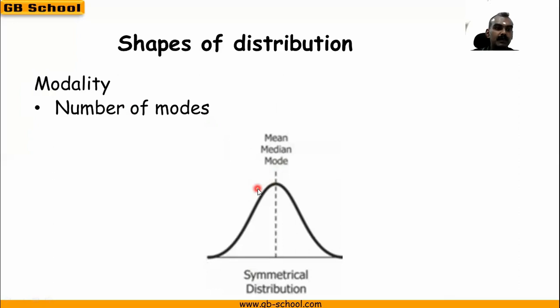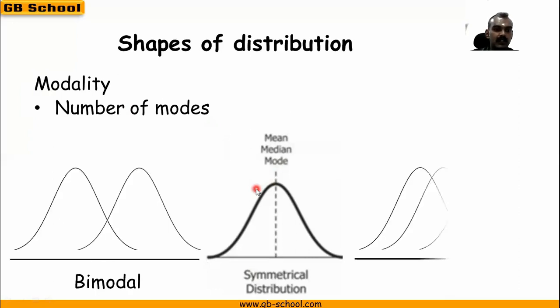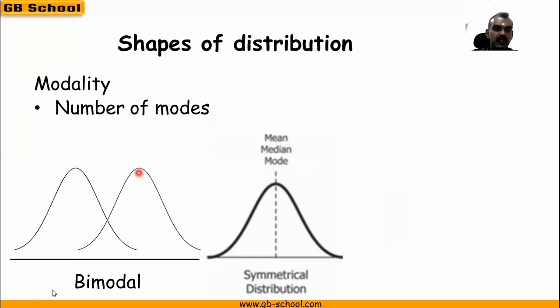Sometimes we may have a distribution like this also. Here we have two modes — this value is a mode and this value is also a mode. So this we call a bimodal distribution.